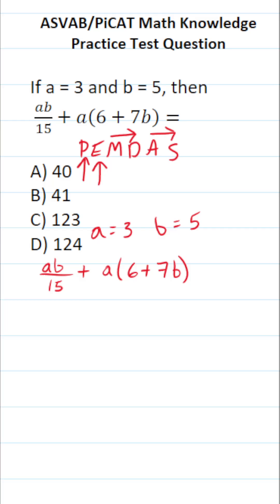So let's go ahead and plug in these values respectively. This becomes 3 times 5 over 15 plus 3 times 6 plus 7 times 5. All right, so we're going to solve what's in parentheses first. But we have a plus sign separating these two different sides of this expression. So we can also work out this side at the same time.